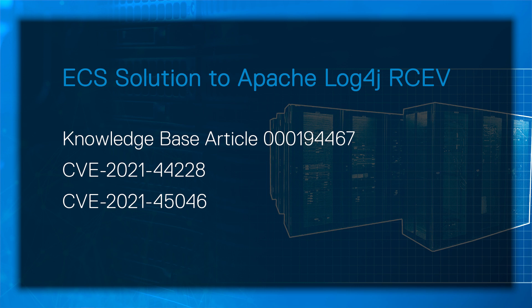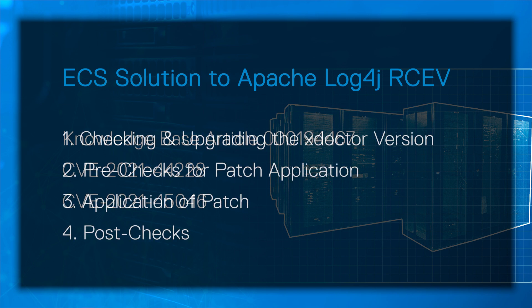Welcome to this video demonstration, which accompanies the KB for the ECS solution to the Apache Log4j remote code execution vulnerability issue. There are two CVEs that are resolved as part of this fix. There are four parts to this video: checking and upgrading the xDoctor version, pre-checks for patch application, application of the patch, and post-checks.